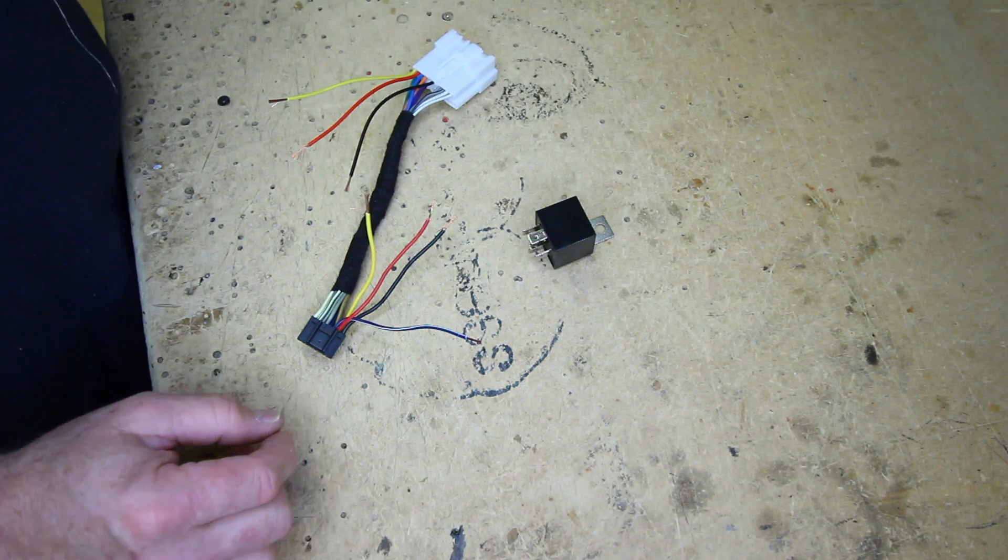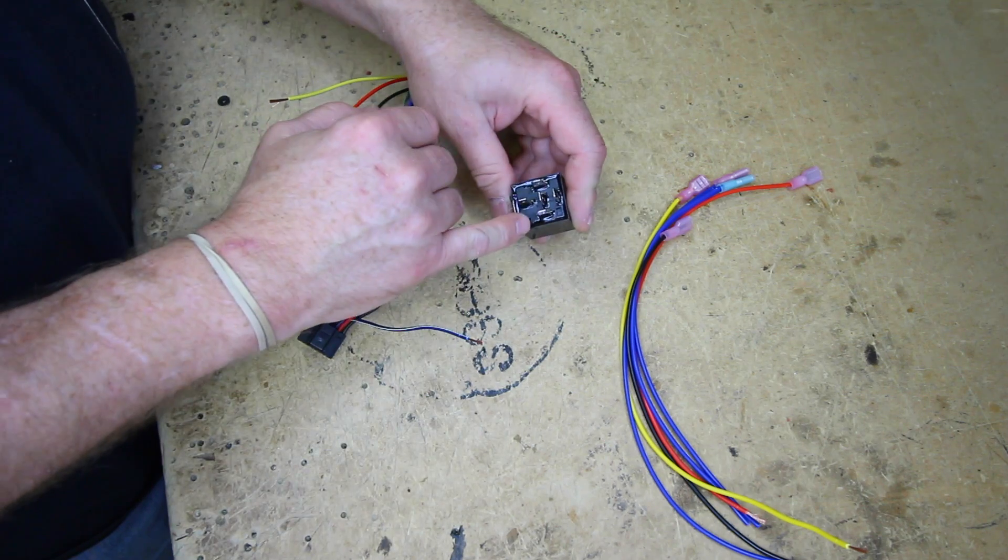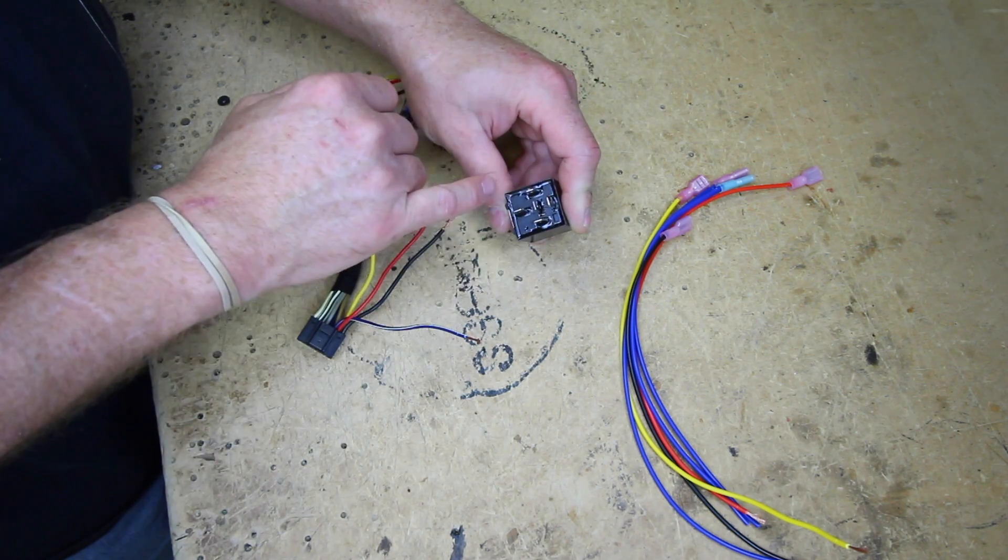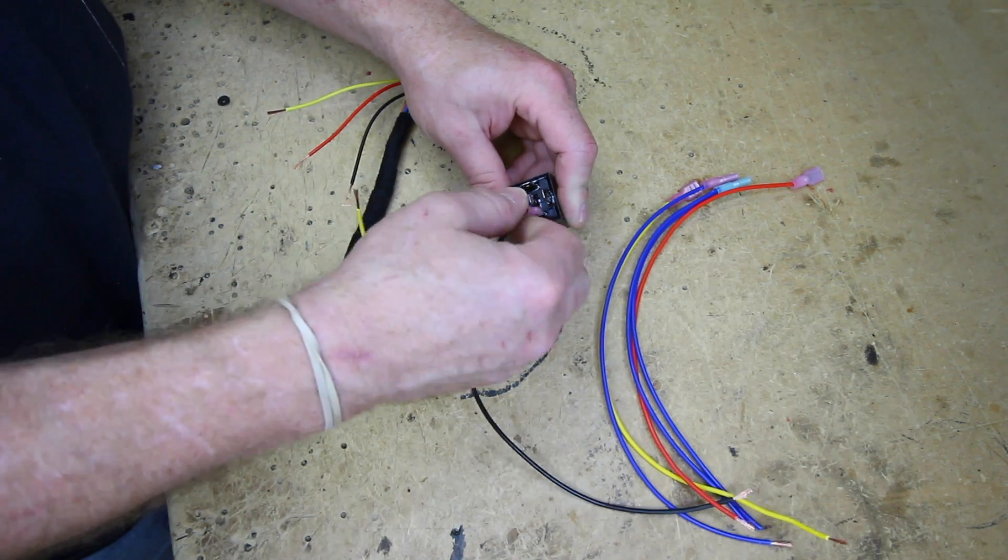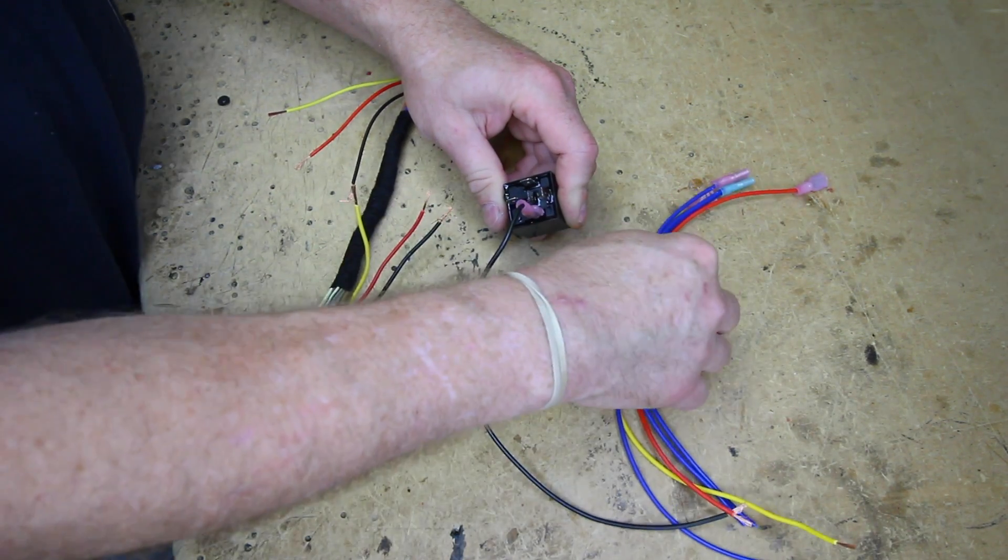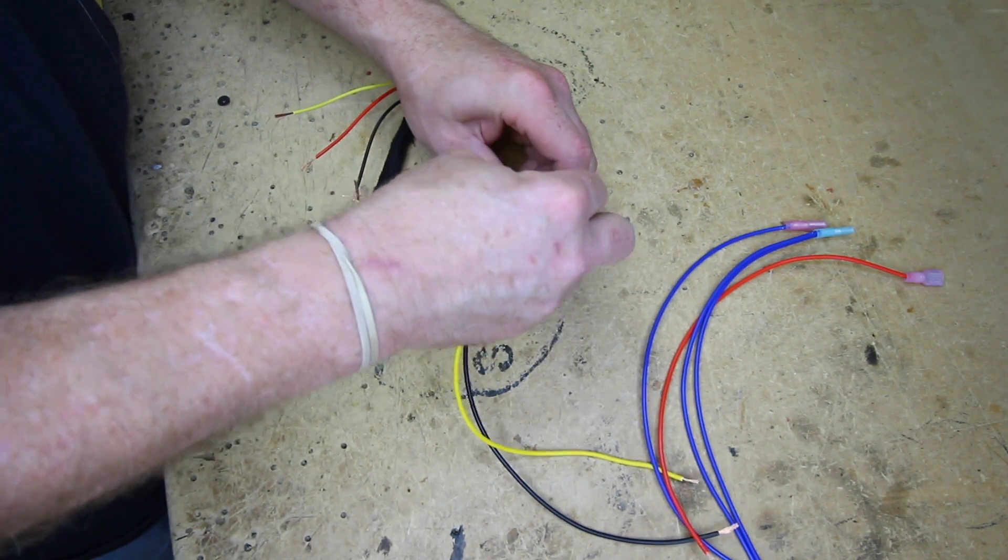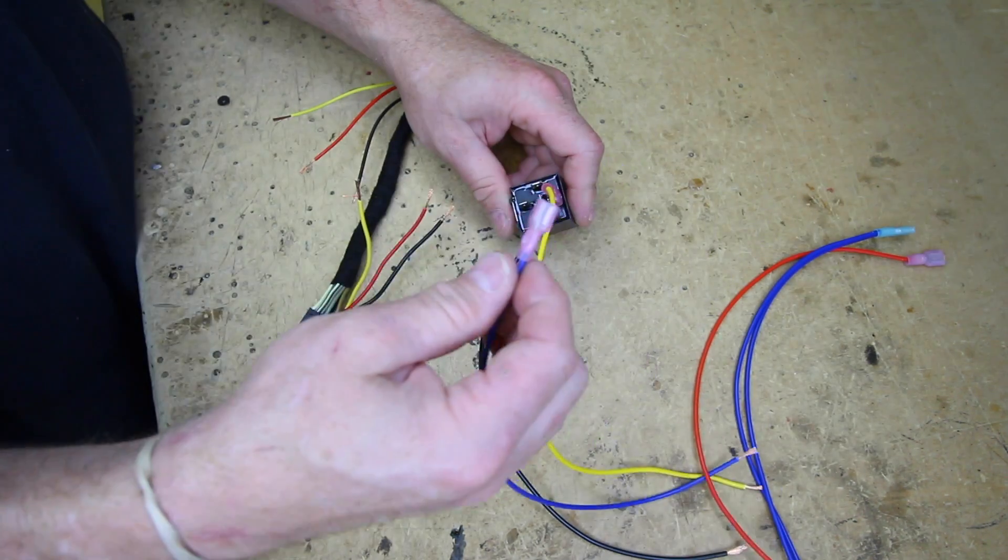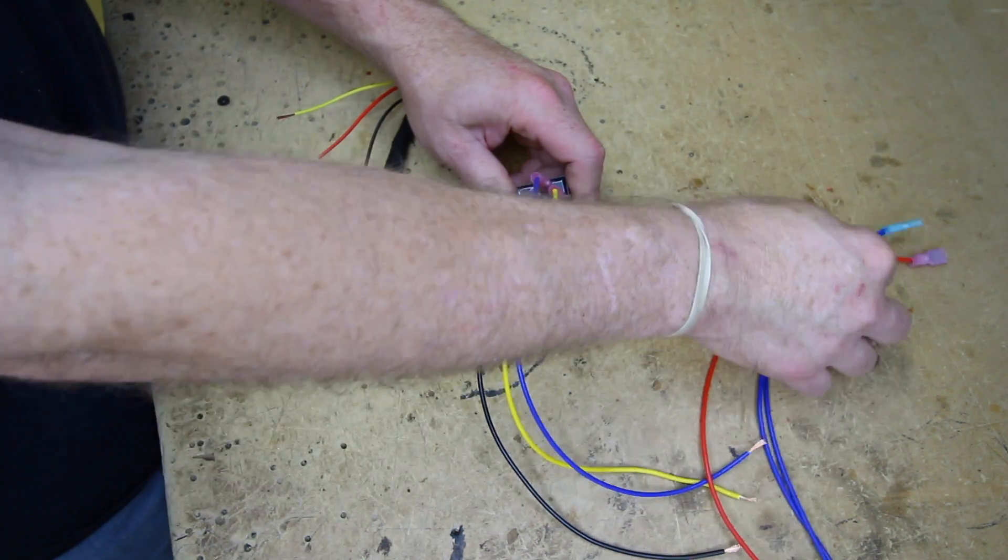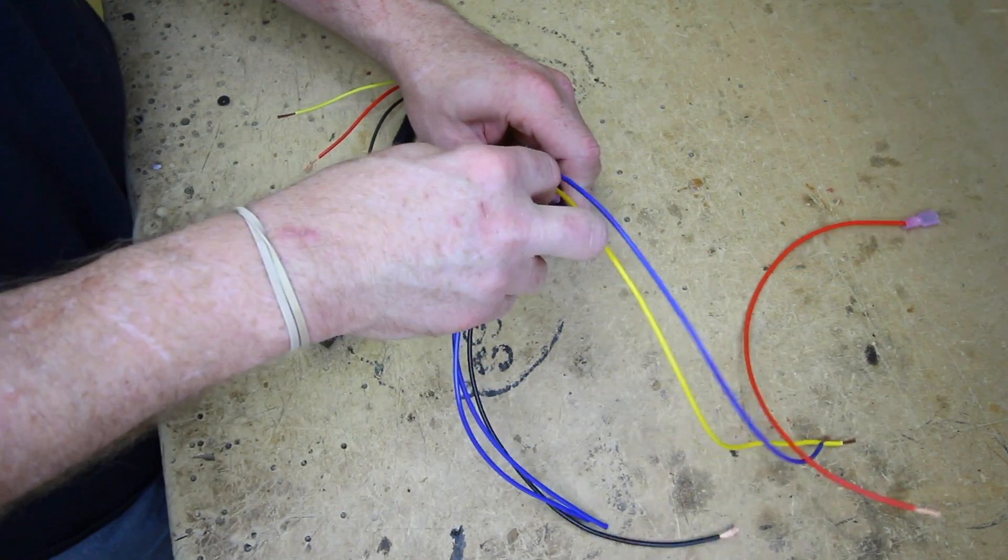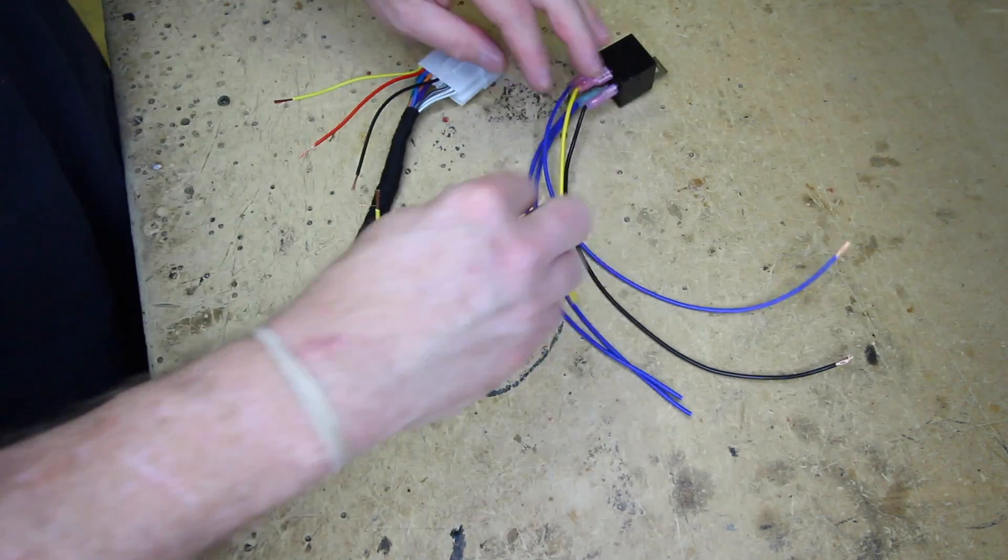Now for that we're going to need a couple pieces of wire. So what we want to do first is there's numbers: 85, 87, 86, 30, and 87A. We're going to take a ground and hook it up to 85. We're then going to take a constant 12 volts, hook it up to 87. We're going to take a blue wire and hook it up to 86. We're going to take a double remote and hook it up to 30. So now we're going to take this to our harness.